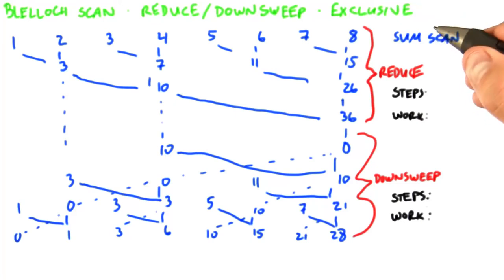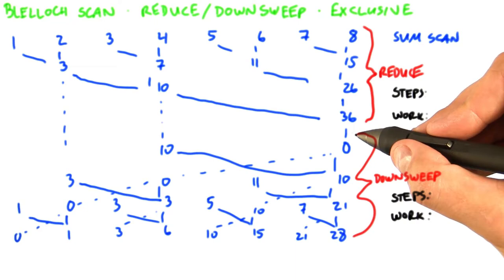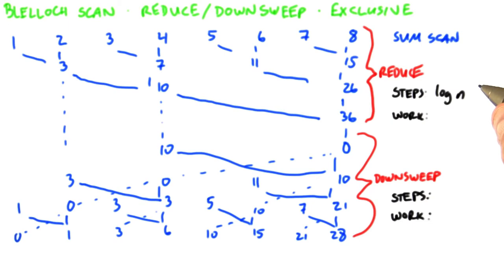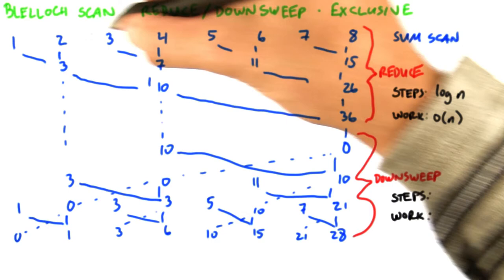So now let's analyze this algorithm. We know the complexity of the first phase, this reduce phase, already. We know that it has log n steps as a function of the input count n and order of n operations. So actually, if we have n elements, we're going to have n minus 1 additions.